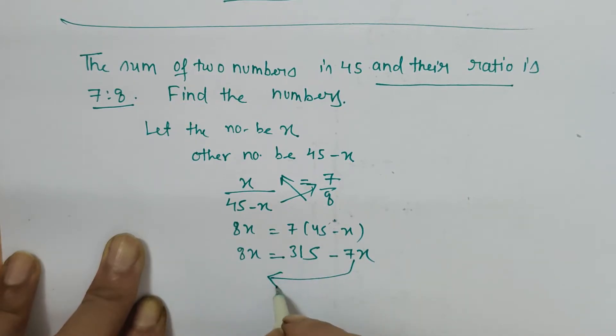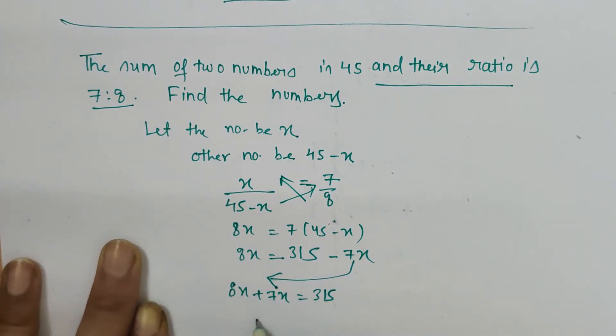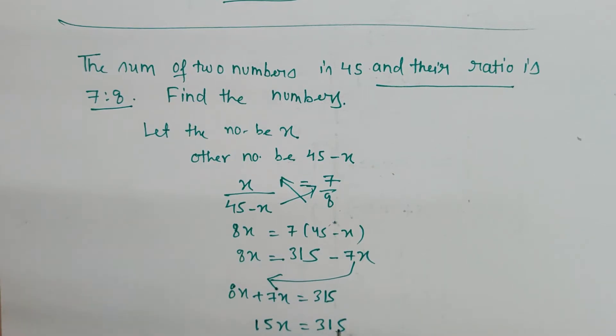Now shift the same terms to one side. So 8x plus 7x is equal to 315, then this becomes 15x is equal to 315.